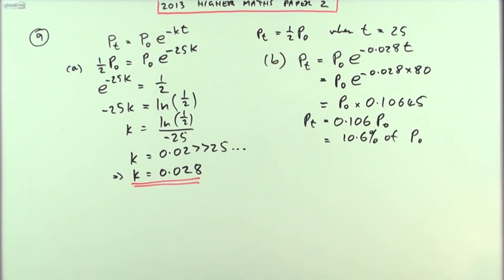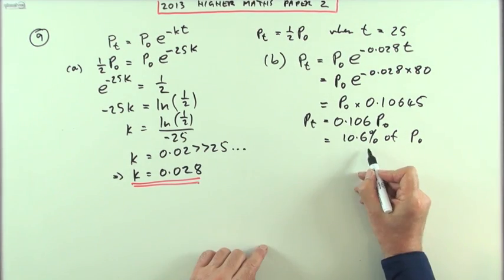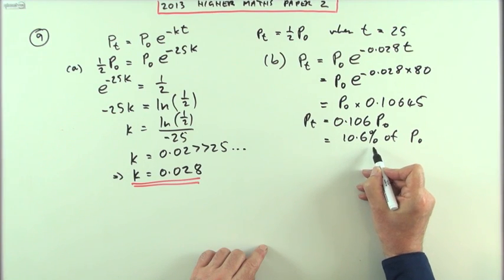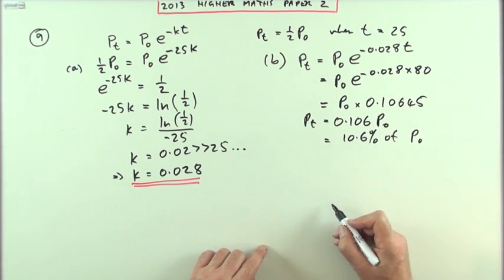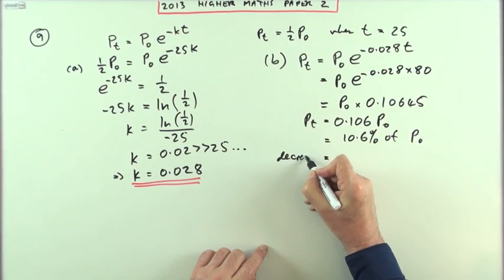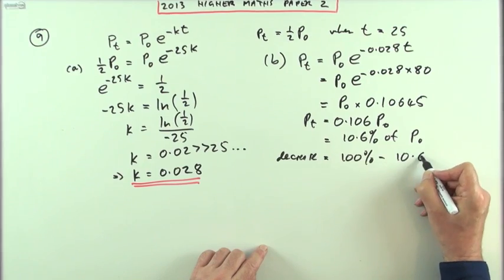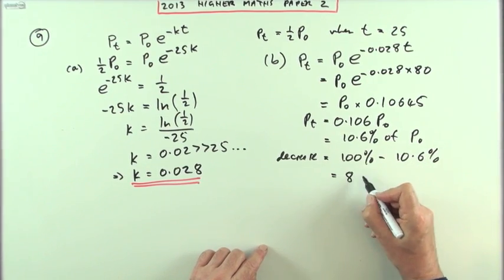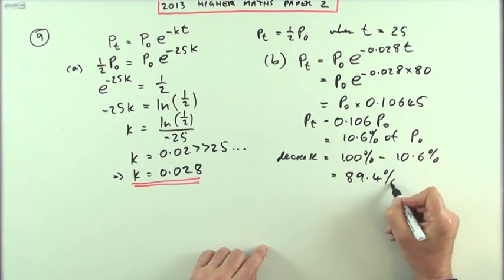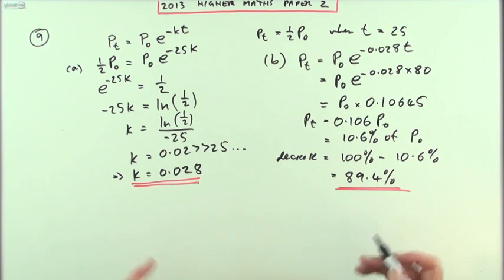But the question didn't ask how much have you got left. It said, what's the percentage decrease? If you've only got 10.6% left, that means you've lost the rest of it. So that means that the decrease is going to be 100 minus 10.6%, which is 89.4%. And that's about all there is to it.